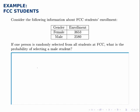The probability is simply the number of ways that that could happen. Out of this group, there are 2,580 ways to select a male student because that's how many male students there are, and there are a total of 6,233 students — I got that number by adding together the female students and the male students.